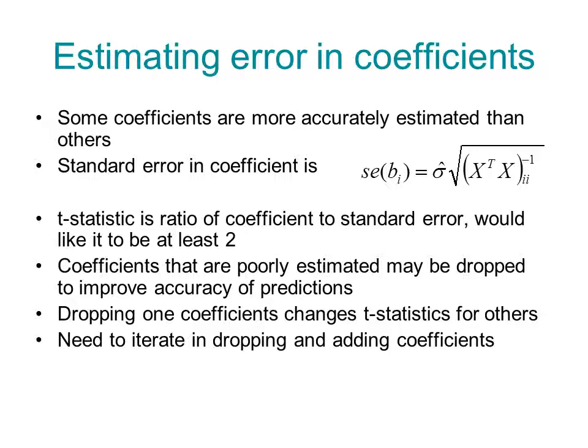So, some coefficients are more accurate than others, and you can derive from the assumption that the estimate of the standard deviation in the coefficient is given by sigma hat times the square root of the diagonal term in the inverse of the matrix X transpose X.